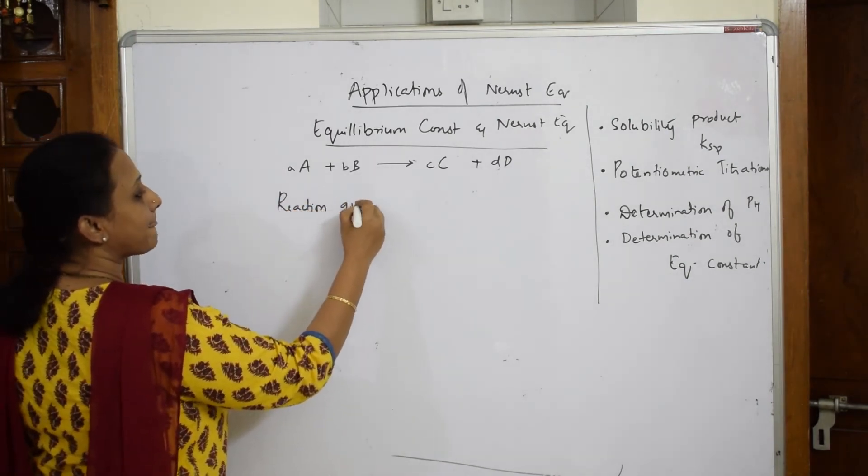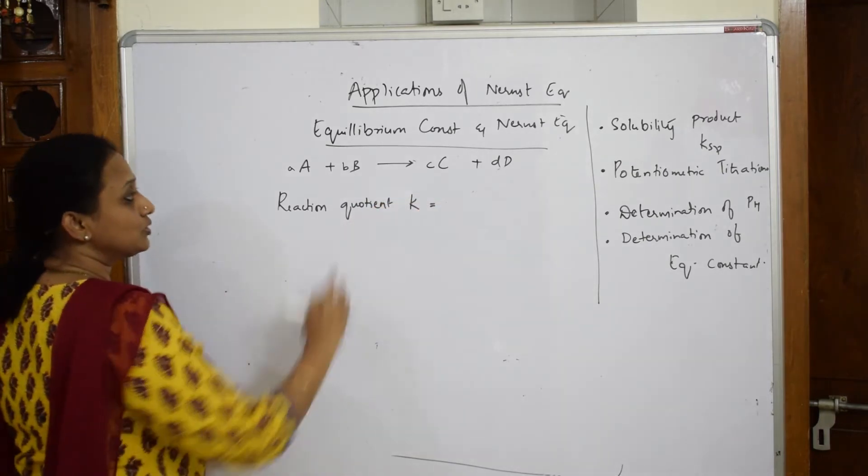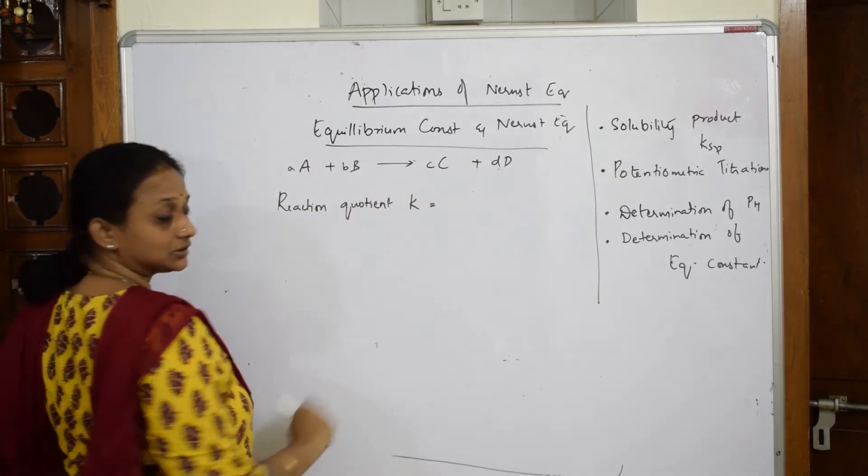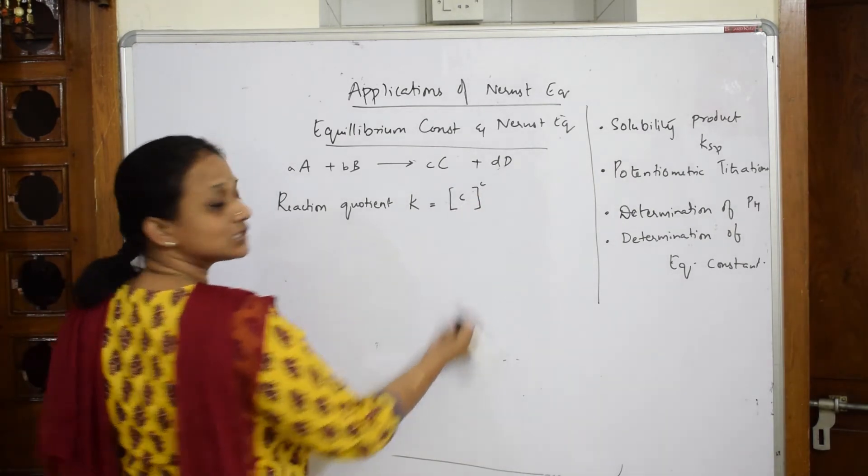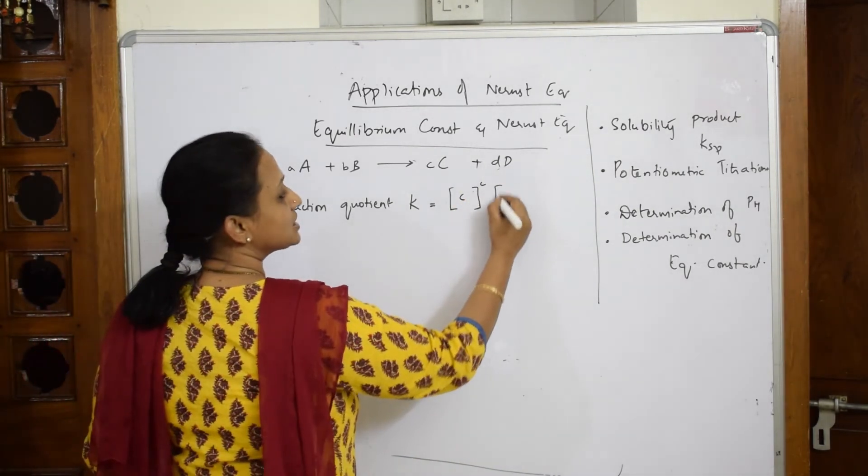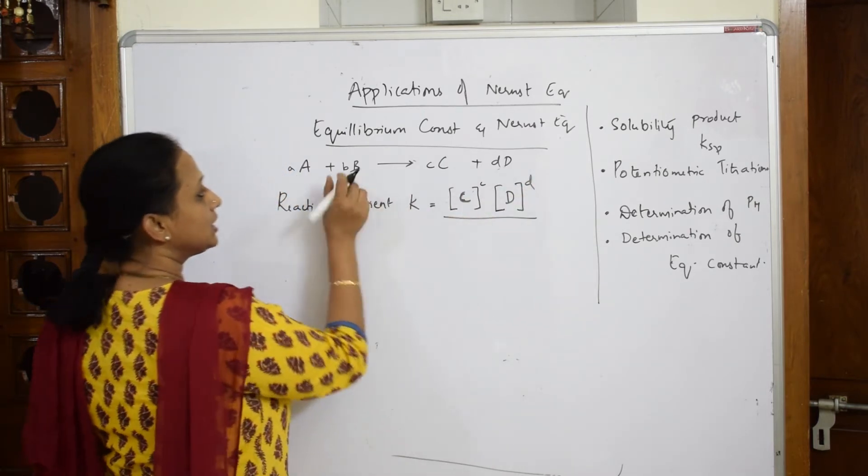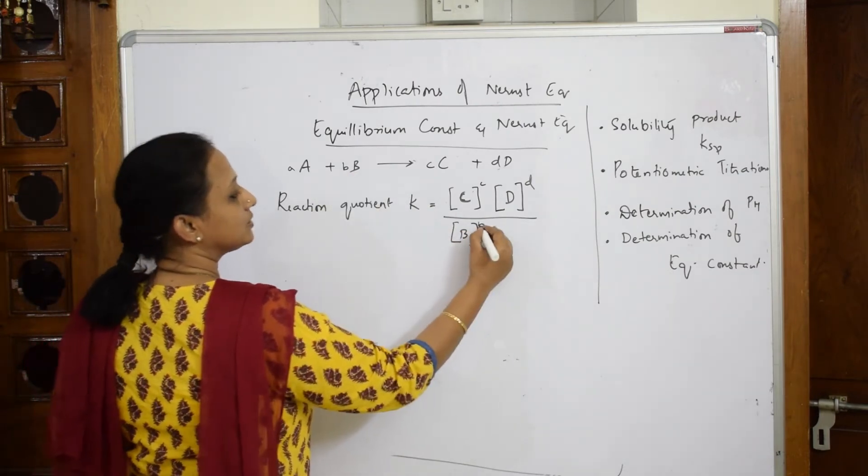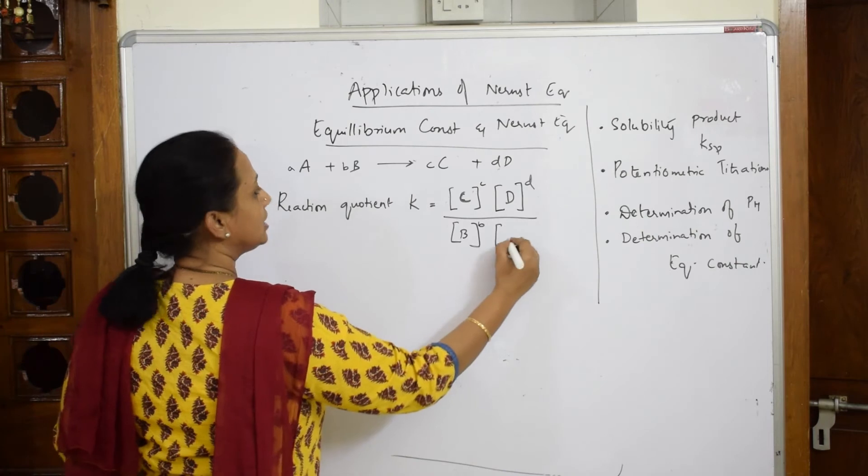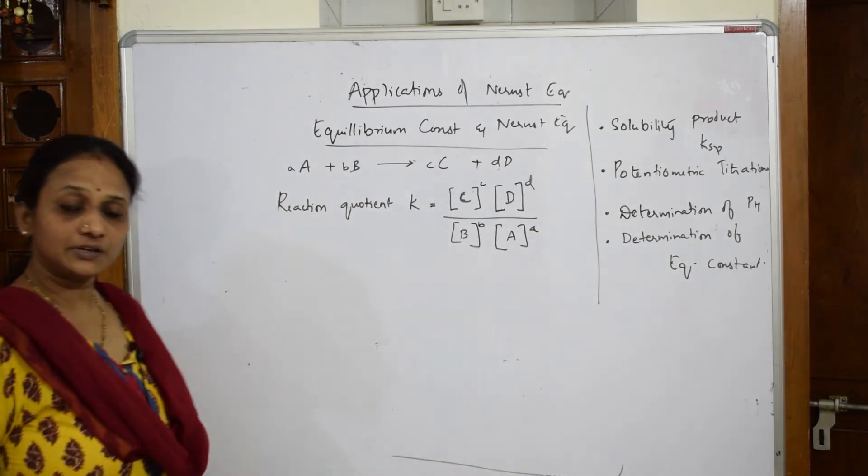Now reaction quotient, that is K, is equal to products by reactants. Product is C raised to the power of small c, product is D raised to the power of small d, divided by product A raised to the power of small a times B raised to the power of small b.